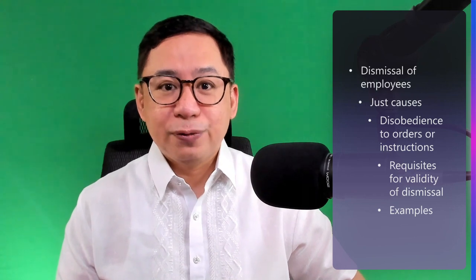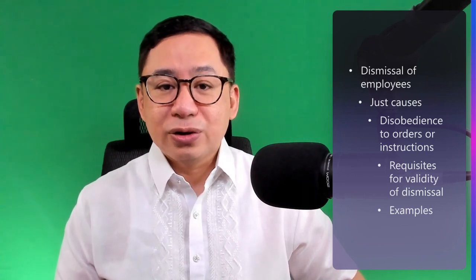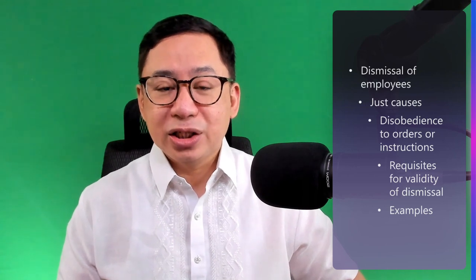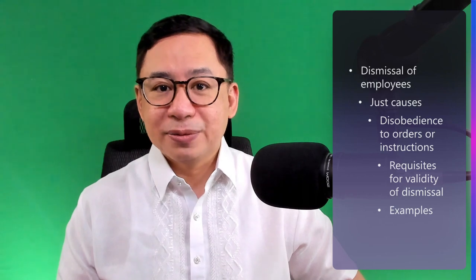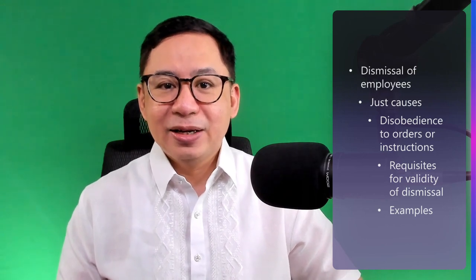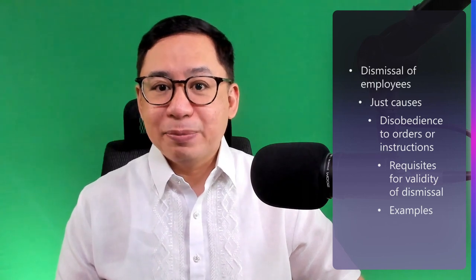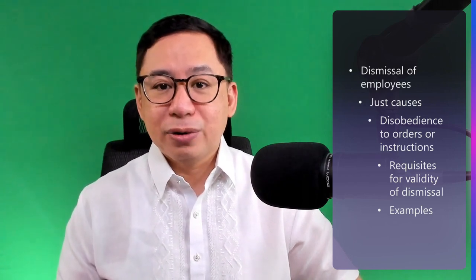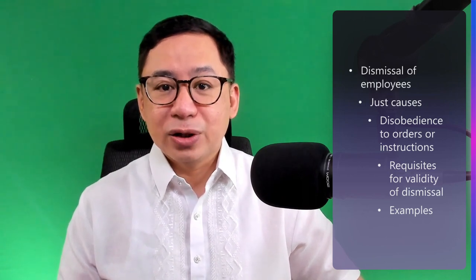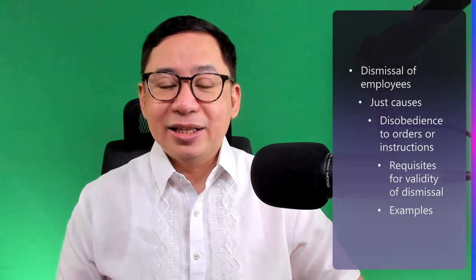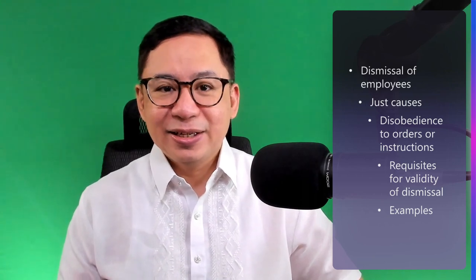Remember also that the order must be lawful. An order is lawful if it is not contrary to law, morals, good customs, public policy, or public order. What is an example of a lawful order? A directive ordering a manager to dismiss strikers who committed illegal acts during the strike. What are examples of an unlawful order? A directive ordering a supervisor to dismiss employees who organized a union. A directive obliging employees to purchase goods from the store owned by the employer — it's an unlawful order because it is contrary to Article 112 of the Labor Code of the Philippines. A directive requiring an employee to organize a company union is an unlawful order because it is an unfair labor practice. A directive requiring employees to sign an antedated employment contract.